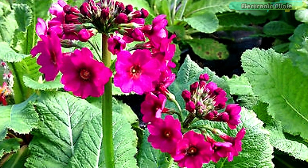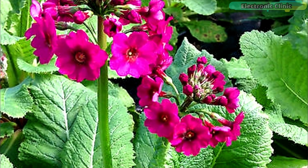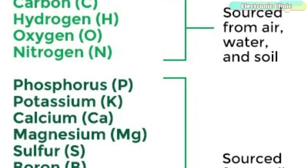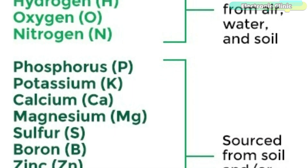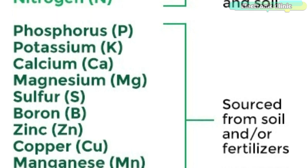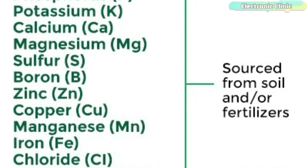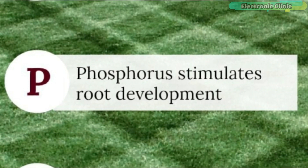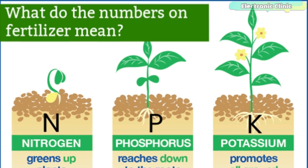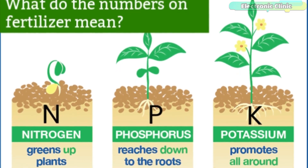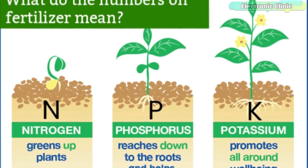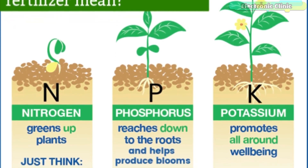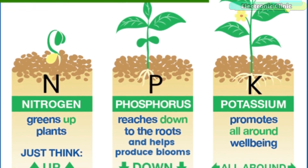All growing plants need 17 essential elements to grow to their full genetic potential. Of these 17 elements, 14 are absorbed by plants through soil while the remaining three come from air and water. Nitrogen, phosphorus and potassium — in short NPK — are the big three primary nutrients in commercial fertilizers. Each of these fundamental nutrients plays a key role in plant nutrition.